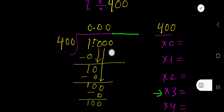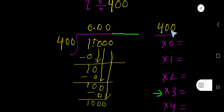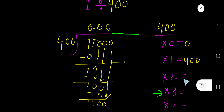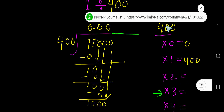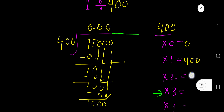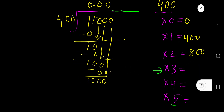Now bring down this 0, giving us 1000. 400 goes into 1000 how many times? Let me find the multiplication table of 400. 400 times 0 is 0. 400 times 1 is 400. 400 times 2 is 800.